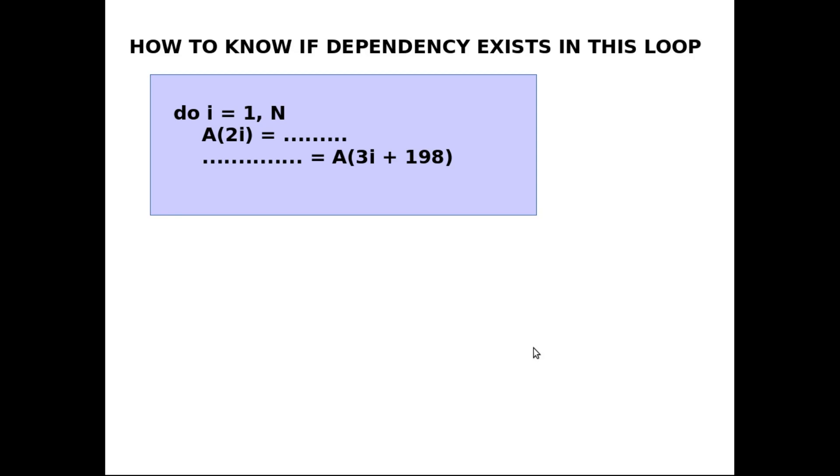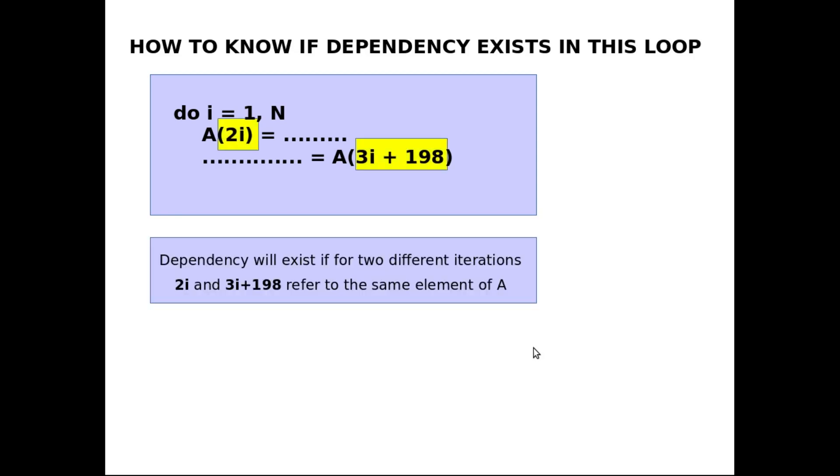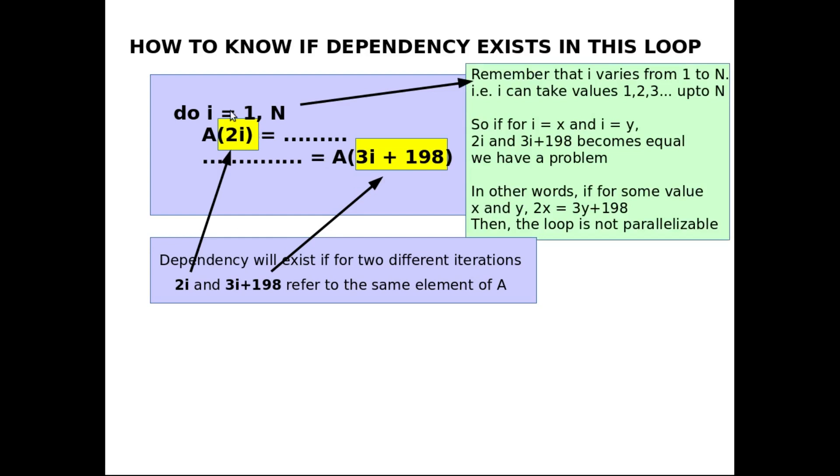Now for this loop, we know that dependence will exist if for two different iterations 2i and 3i plus 198 refer to the same element of A. So dependency will exist if we try to access the same element of the array A in two different iterations. And as we can see, i varies from 1 up to N. So i can take values 1, 2, 3 up to N. And now if for some i equal to x and for some i equal to y, if 2x becomes equal to 3y plus 198, then that is a problem.